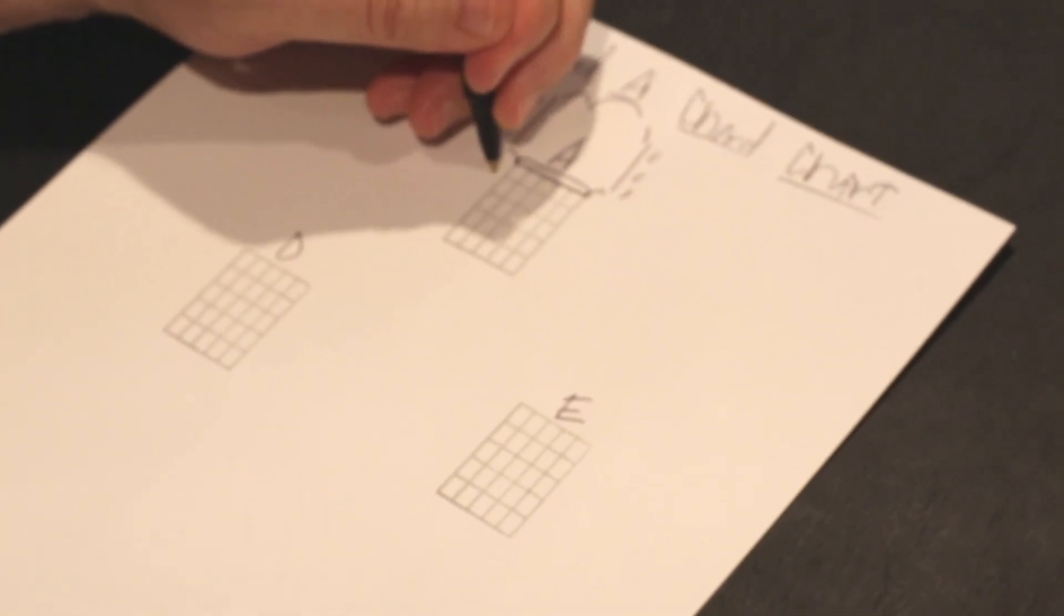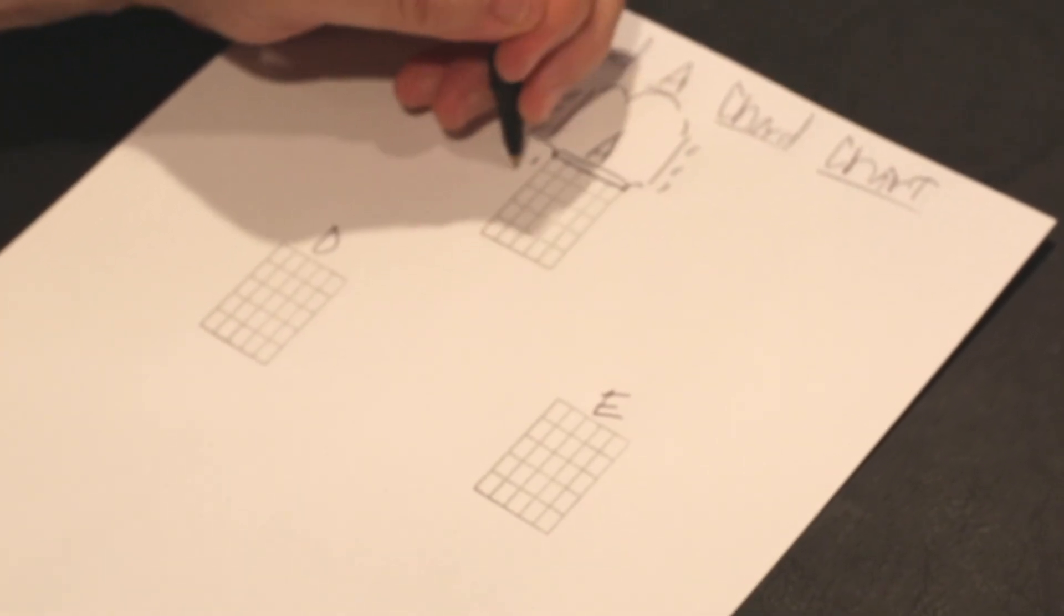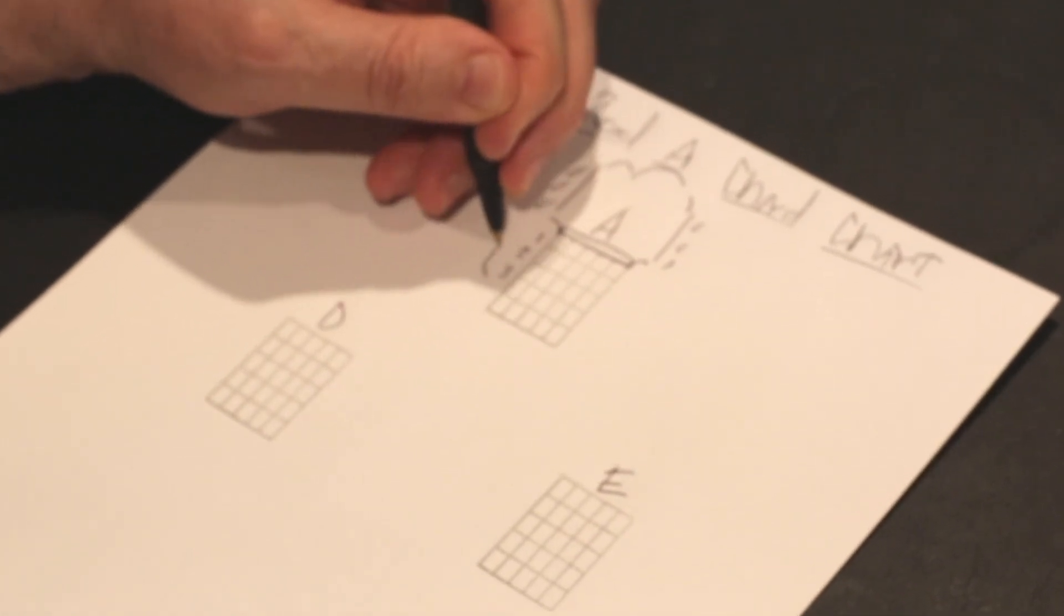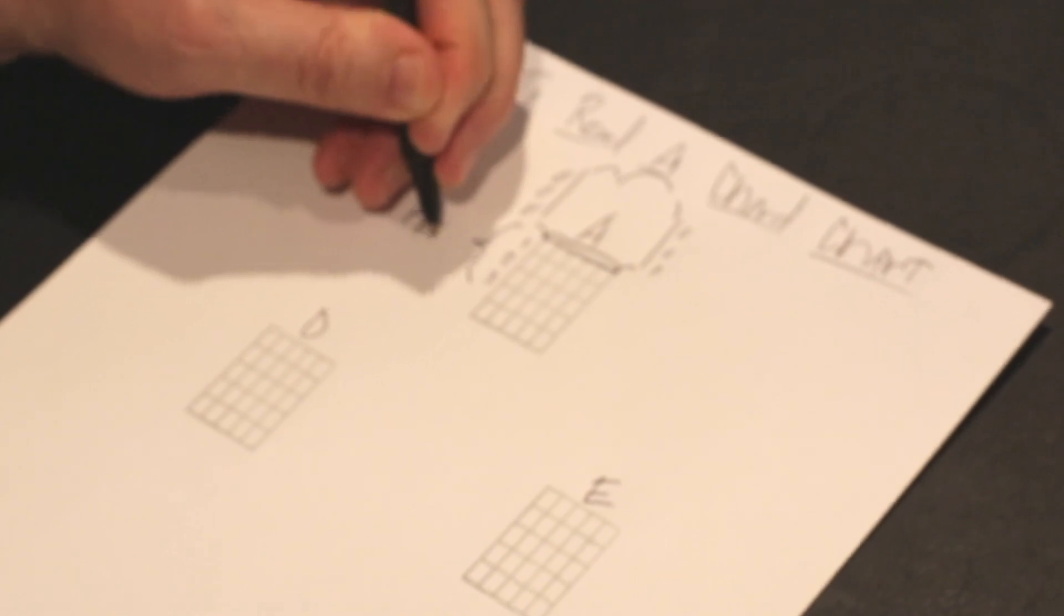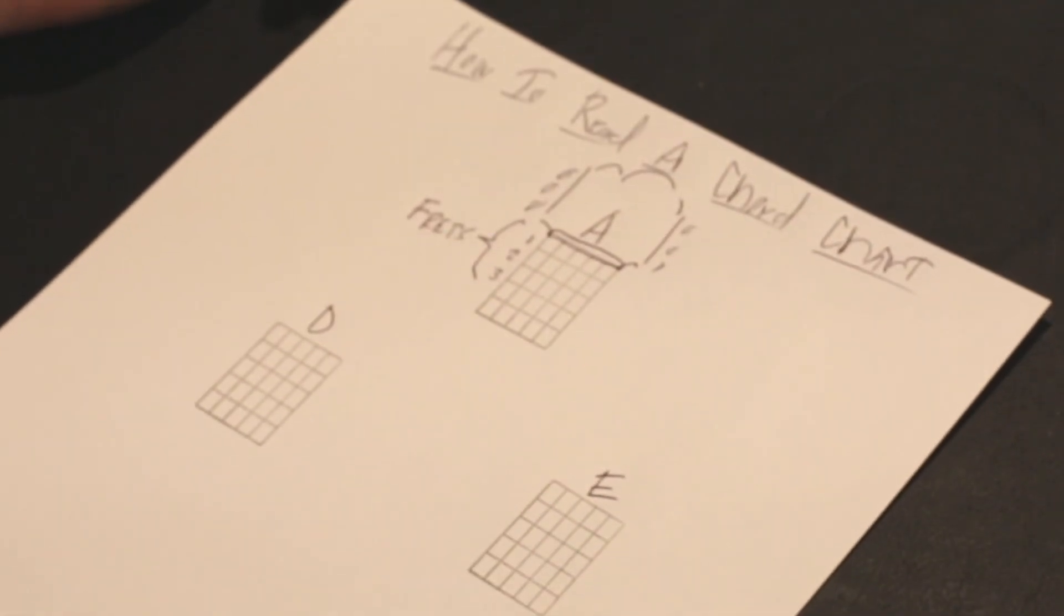So this is my first fret right here. This part section right here. This is my second fret. This is my third fret. So this is where the frets are on the guitar. And this will help you when you like to learn a new chord.